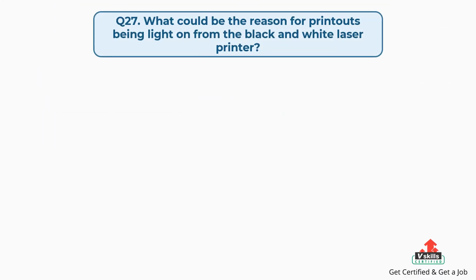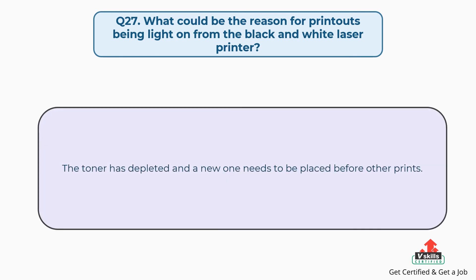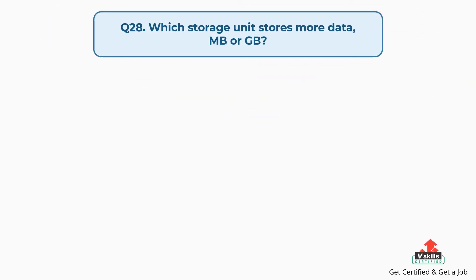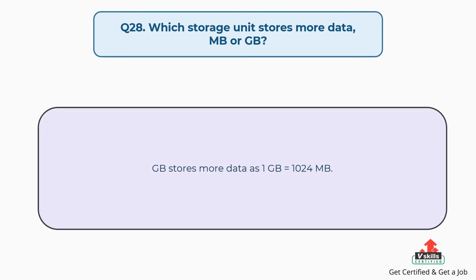Question number twenty-seven: what could be the reason for printouts being light from a black and white laser printer? The answer is, the toner has depleted and a new one needs to be placed before other prints. Question number twenty-eight: which storage unit stores more data, MB or GB? The answer is, GB stores more data as 1 GB equals 1024 MB.